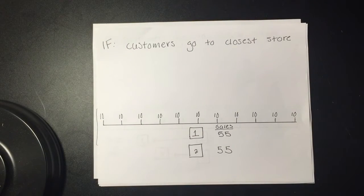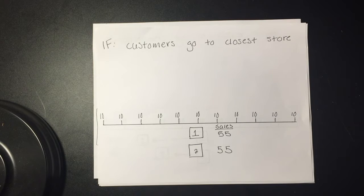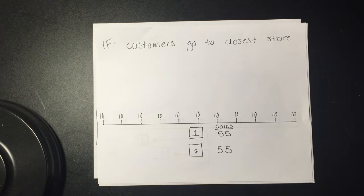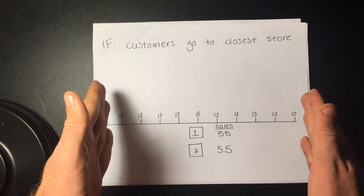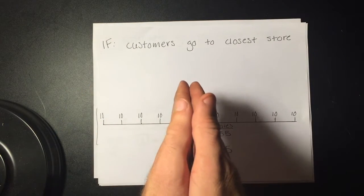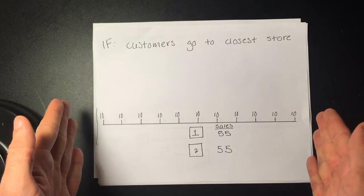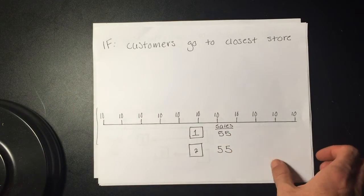If we assume that each one of the 10 consumers is equally distributed from a store, then the stores will align themselves in the center to maximize both sales. Consumers will come from both sides and meet in the middle where they have a random chance of going to each store, resulting in sales of 55 to each store.